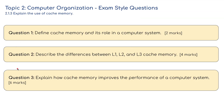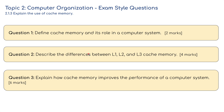As always, we have three exam questions: a two-mark, a four-mark, and a six-mark question. Question one: define cache memory and its role in a computer system — two marks. Question two: describe the difference between level 1, level 2, and level 3 cache memory. Question three: explain how cache memory improves the performance of a computer system — six marks.